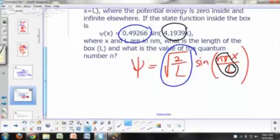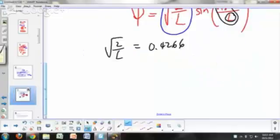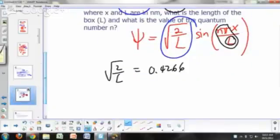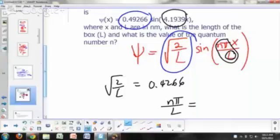So to solve this problem, you're going to say square root of 2 over L equals 0.49266. And then once you've solved for your L, then you're going to say the other number, 4.1939 is going to be equal to n pi over L.